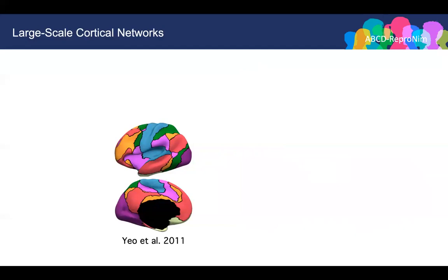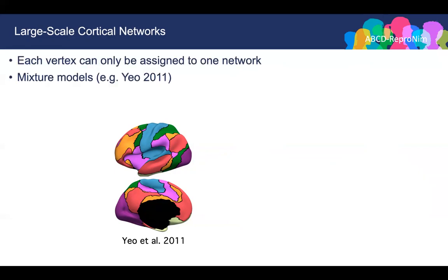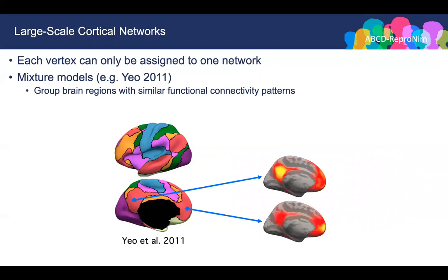Here I'm showing the 17-network parcellation from Thomas' 2011 paper. These networks are obtained by averaging data across around 1,000 subjects. Mixture model is one common approach for estimating large-scale brain networks. The mixture model approach tries to group brain regions with similar functional connectivity patterns together. For example, even though the posterior cingulate and medial prefrontal cortex are far away, they are grouped into one network because they have similar connectivity patterns.